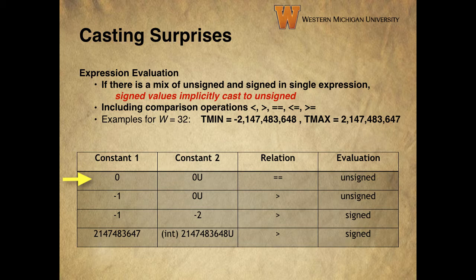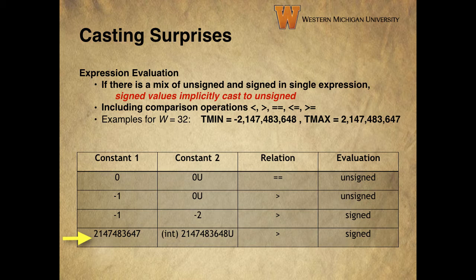In the first row, 0 equals 0 whether you're using signed or unsigned — no surprise. But because the second 0 is unsigned, the expression is evaluated as two unsigned values. The second row shows something surprising: the negative 1 is implicitly cast since the constant 0u is unsigned, so the whole expression is evaluated as unsigned, and negative 1 ends up being greater than 0. Row 3 shows a simple signed evaluation of two signed numbers — no surprises. Finally, row 4 shows a situation where we might think the relation should be less than, but when the unsigned constant is cast to signed, the most significant bit — the sign bit — comes into play, changing it from a large positive number to a large negative number, so the relationship is the opposite of what we may expect.